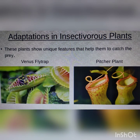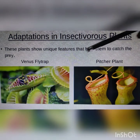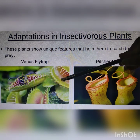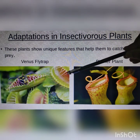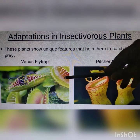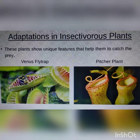Now let us look at the adaptations in insectivorous plants. These plants show unique features that help them catch their prey — the insect. The first example is the Venus flytrap. It has two lobes that are open, with hair-like structures at the edges. When an insect comes and sits on it, the two lobes close and the insect is trapped. This is how they catch insects and take their nutrition.